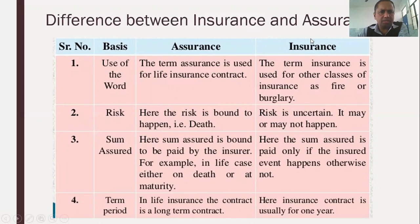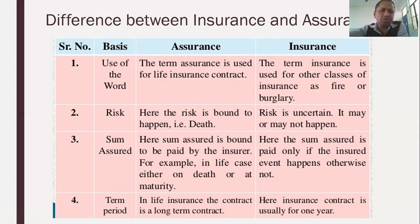The next basis of difference is risk. In assurance, the risk is bound to happen. If the assurance covers up to death, then either death or the completion of the policy time period — whichever is earlier — is covered by the insurance company. If the risk has not occurred, the amount is paid back to the insurer.